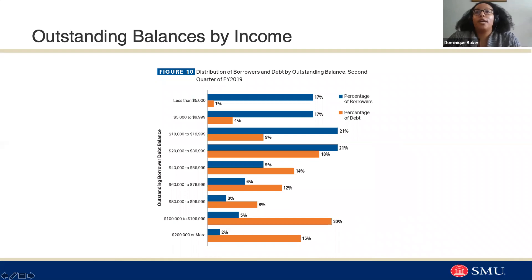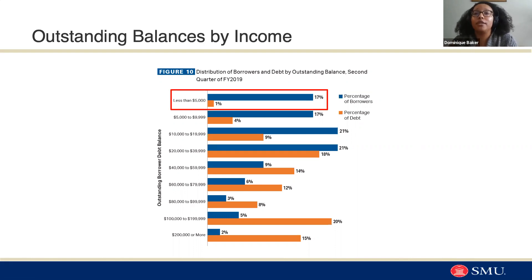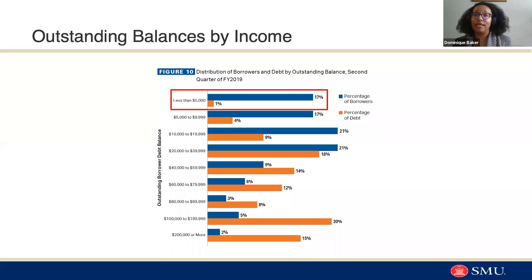The other major takeaway is a better understanding of who has debt and how much debt they have. We often hear about people having over $200,000 in debt, but it's critical to keep in mind what the actual distribution of who has debt looks like. For individuals who have less than $5,000 in outstanding debt, 17% of borrowers fall into this category, and that represents approximately 1% of all the outstanding debt in the United States. If we look at the first three sections — individuals with less than $20,000 in outstanding debt — that's actually 55% of all borrowers. Over half of all borrowers have less than $20,000 in debt.